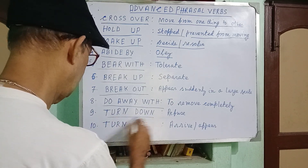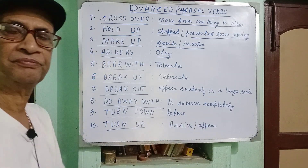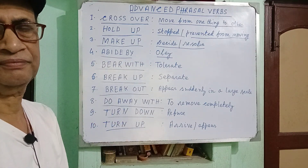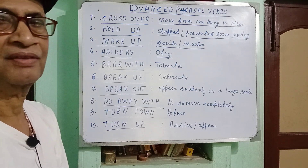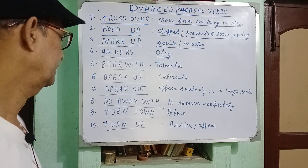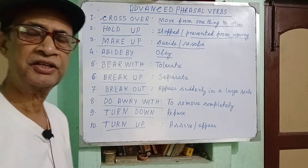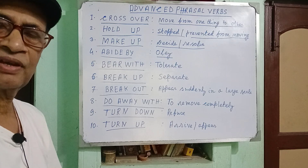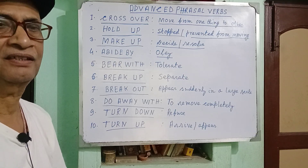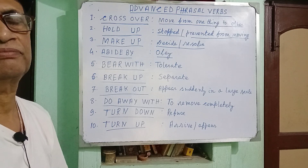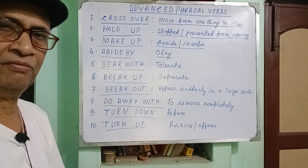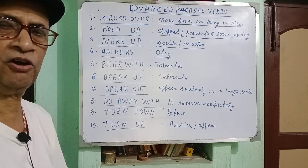'Turn off' means to arrive or appear. For example, 'Only a few members have turned off in the meeting.' So I have given you 10 frequently used advanced phrasal verbs. Please subscribe to my channel — I shall be encouraged and enthused to give you more examples. Thanking all of you. Goodbye.